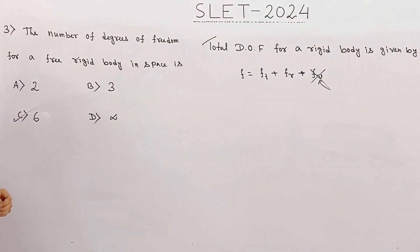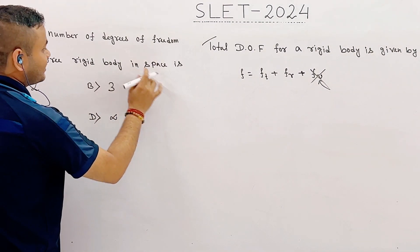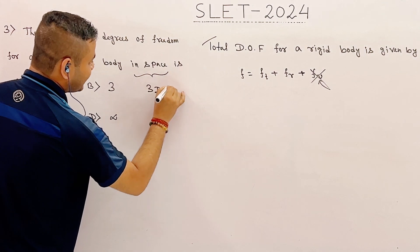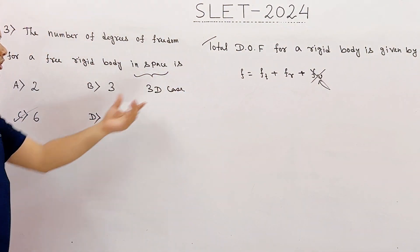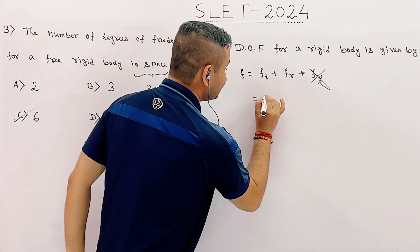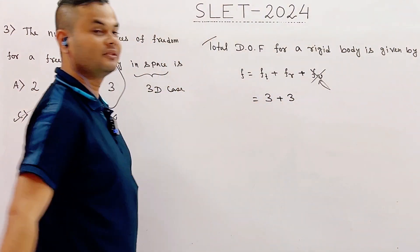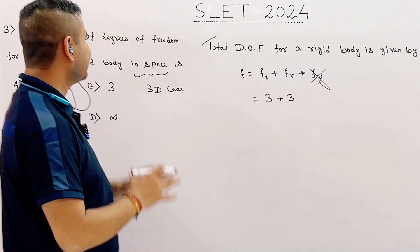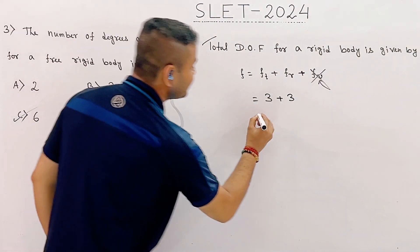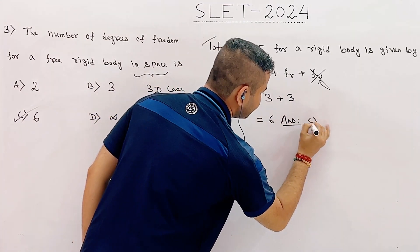According to this problem, the rigid body is moving freely in space — that means it is a 3-dimensional case. For this case, the translational degrees of freedom is 3 and the rotational degrees of freedom is also 3. Therefore, the total degrees of freedom for a rigid body moving freely in space is 6. The correct answer is option c.